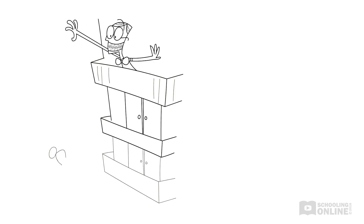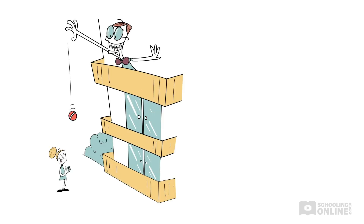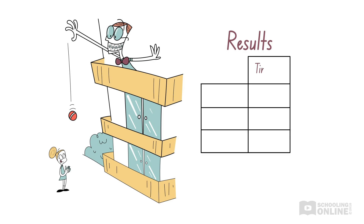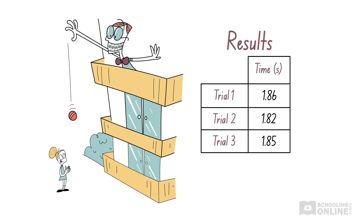Imagine you are performing an experiment to find out how long it takes for a cricket ball to fall three storeys. On the first trial, you find that the ball takes 1.86 seconds to reach the ground. You repeat the experiment twice and find that it takes 1.82 seconds and then 1.85 seconds. This experiment has a high degree of repeatability because the results are consistent between all three repetitions. Therefore, the results of this experiment are reliable.